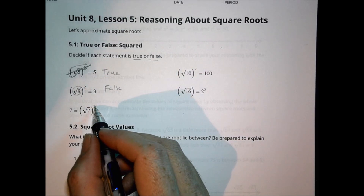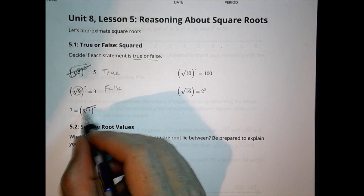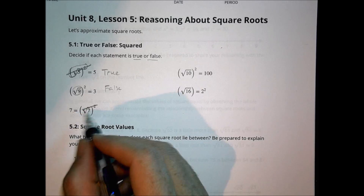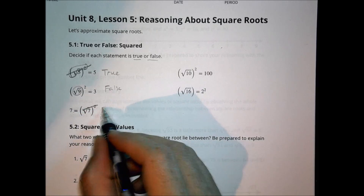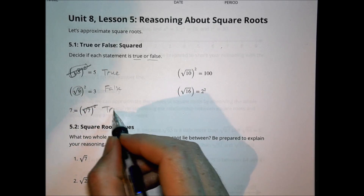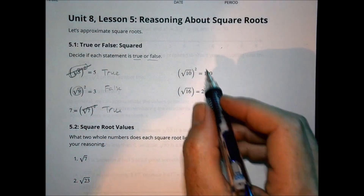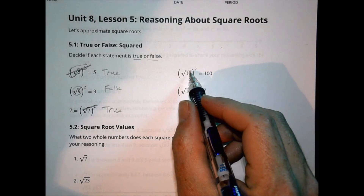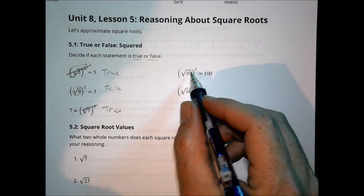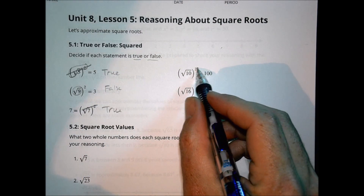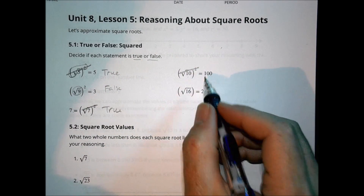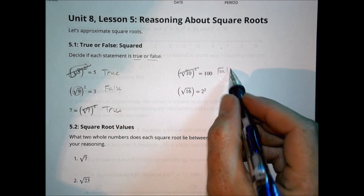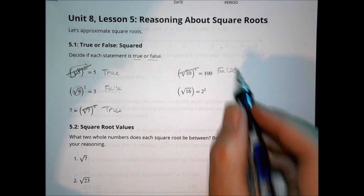Here we have a square and a square root — those cancel one another out, so 7 equals 7. That is a true statement. Right here we have the square root of 10 squared. The squared cancels the square root out. Does 10 equal 100? No, it does not. So that is a false statement.